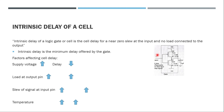The fourth parameter is temperature: as the temperature increases, the delay also increases. This is because higher temperature causes atoms to vibrate more, which hinders the flow of electrons, causing the delay to increase. However, there is a concept of temperature inversion at low technology nodes, which will be discussed in upcoming videos.